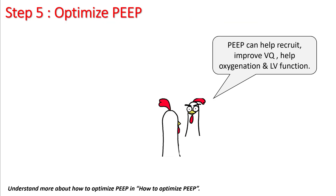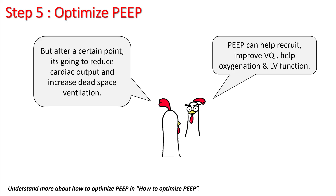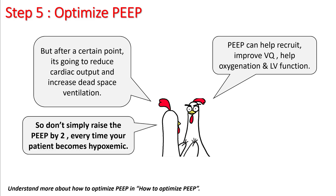The next step is to optimize PEEP. PEEP can help recruit, improve VQ matching, help oxygenation, and improve lung function. However, at a certain point it will start reducing cardiac output and increase dead space ventilation. So whenever you see a hypoxemic patient, don't randomly increase PEEP by 2. Watch the lecture on how to optimize PEEP to learn how to use these numbers to best improve recruitment and VQ matching while avoiding complications.